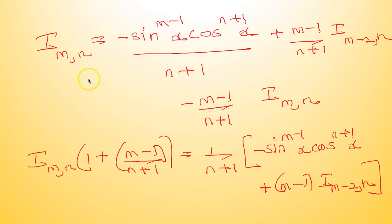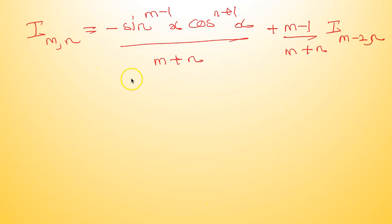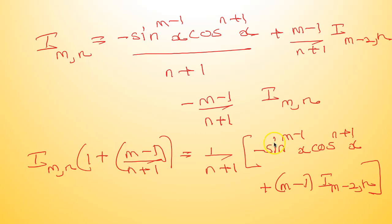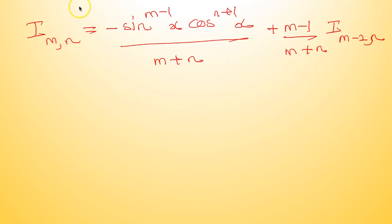Taking I_{mn} terms together: [1 + (m−1)/(n+1)]·I_{mn} = −sin^(m−1)x·cos^(n+1)x/(n+1) + (m−1)/(n+1)·I_{m−2,n}. Simplifying with (n+1+m−1)/(n+1) = (m+n)/(n+1): I_{mn} = −sin^(m−1)x·cos^(n+1)x/(m+n) + (m−1)/(m+n)·I_{m−2,n}. This is the reduction formula for I_{mn}.